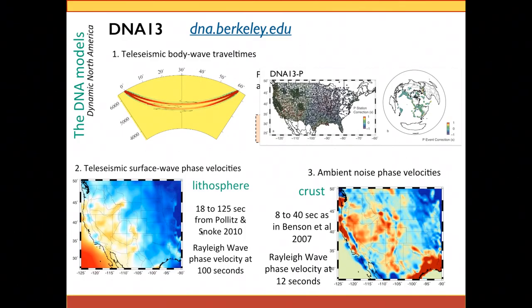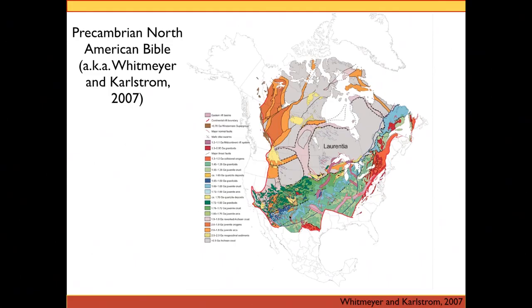Whitmire and Karlstrom — what I call the Precambrian North American Bible — provides a robust view of how North America grew from proto-continents forming the core of Laurentia, then a series of accretionary events growing the U.S. from the southeast, resulting in a northeast-southwest grain. Most important for the western U.S. focus is the strontium line — the red line representing the boundary between old and young lithosphere. Most of Washington, California, and Nevada can be considered relatively young, or at least post-Cambrian.